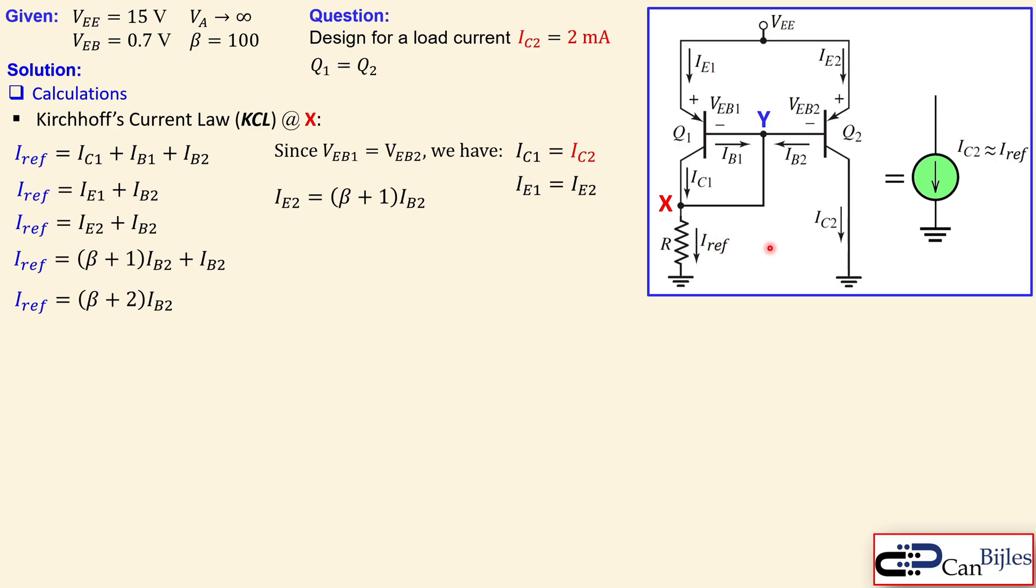But we need a relationship between the load current and the reference current. So that is not exactly what we have now. So we need to rewrite this IB2. That is possible by looking at the collector current, which is beta times the base current. And that's specific for the Q2.